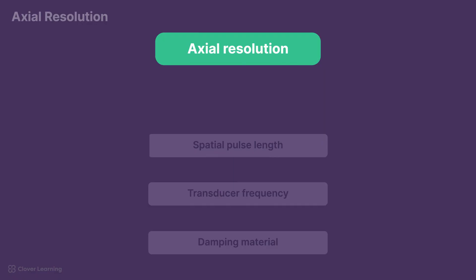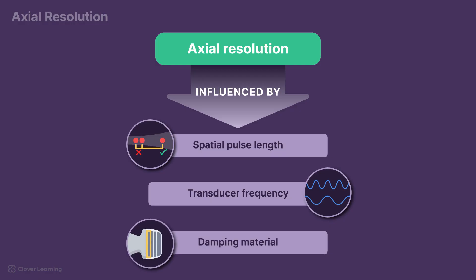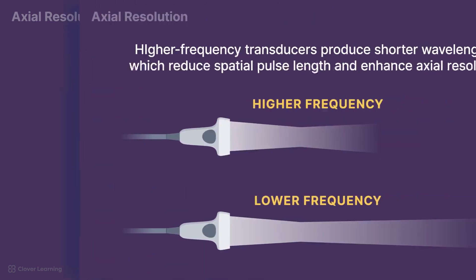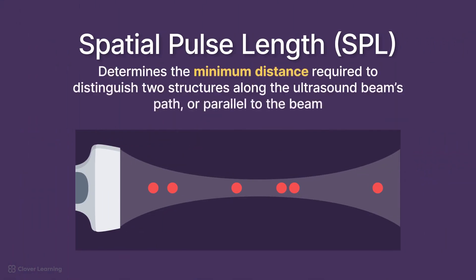Axial resolution is influenced by spatial pulse length, transducer frequency, and damping material. Spatial pulse length directly affects axial resolution, as shorter spatial pulse length improves resolution by reducing the overlap of echoes from adjacent structures. Higher frequency transducers produce shorter wavelengths, which reduce spatial pulse length, or SPL, and enhance axial resolution.